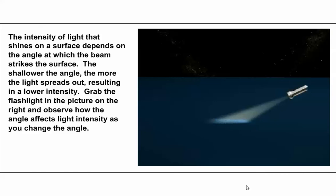Earth is tilted on its axis at a 23.5 degree angle, and as it revolves around the sun, the location that gets the direct beam of light changes throughout the year.